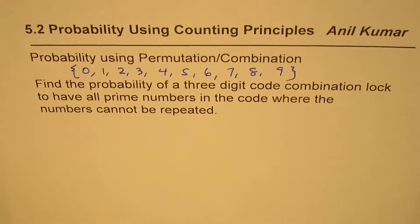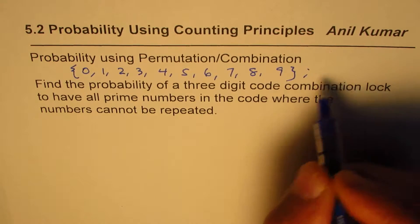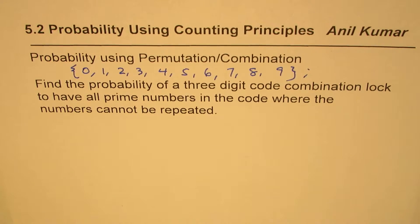So let's take these 10 numbers as our total possible outcomes. What we have here is that the total numbers are 10 with us.